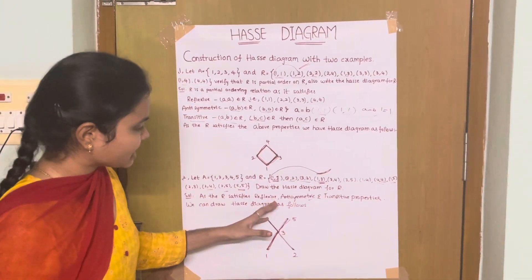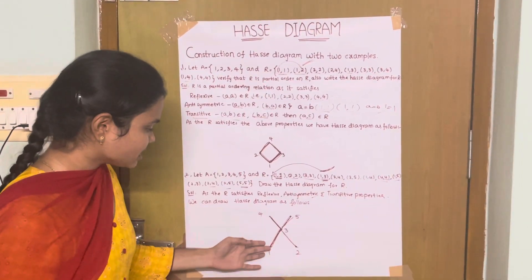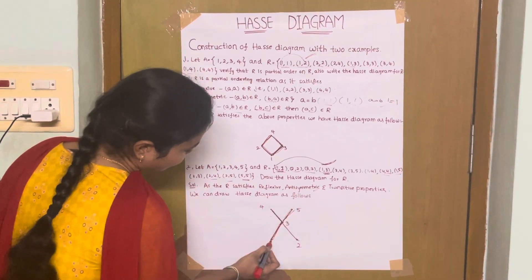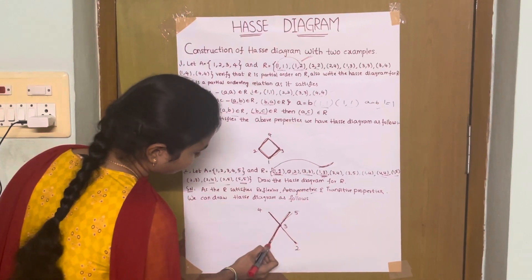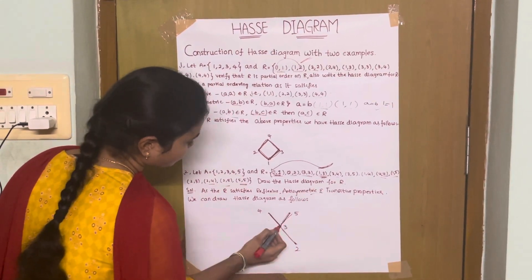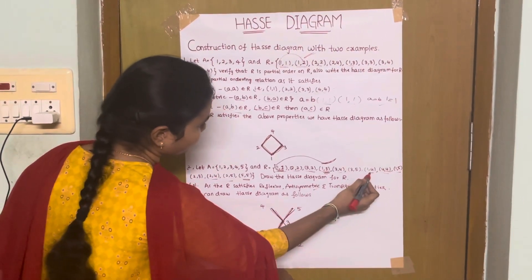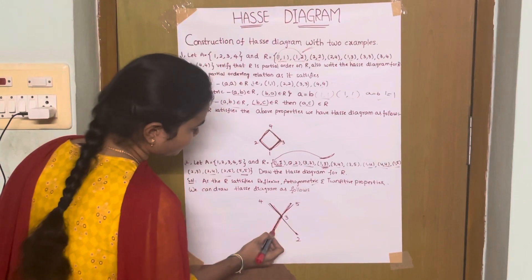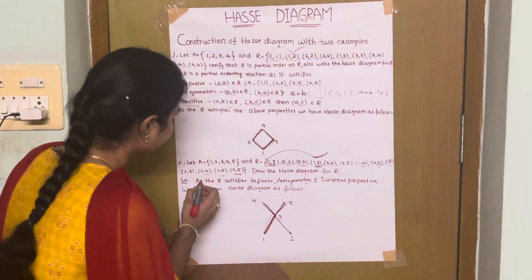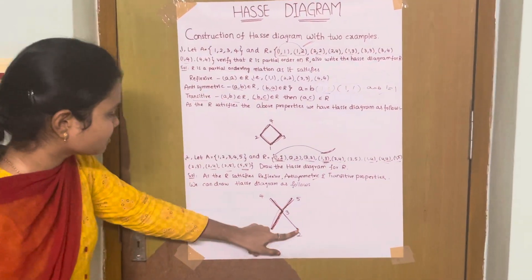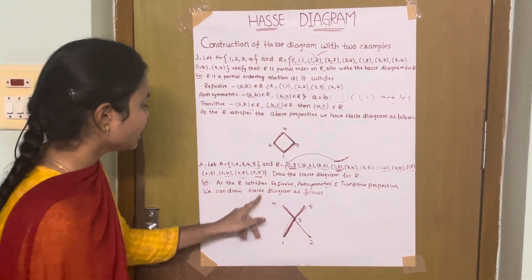All the above properties — reflexive, antisymmetric, and transitive — are satisfied. We can draw the Hasse Diagram as follows. Consider (1,1), (2,2), (3,3) as they are. From 1 to 3, we have (1,3). From 3 to 4, we have (3,4), and from 3 to 5 we have (3,5). From the path 1→2→3 and 3 to 4, we get (1,4). From 1→2→3 and 3 to 5, we get (1,5). (2,3) goes from 2 to 3. (2,4) from 2 to 3 and 3 to 4. (2,5) from 2 to 3 and 3 to 5. (4,4) and (5,5) are as they are.